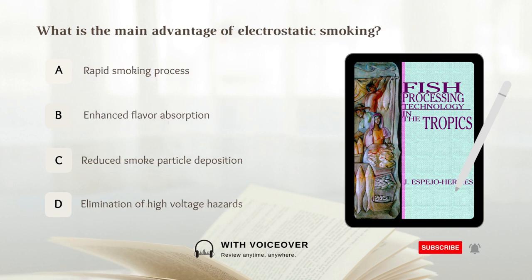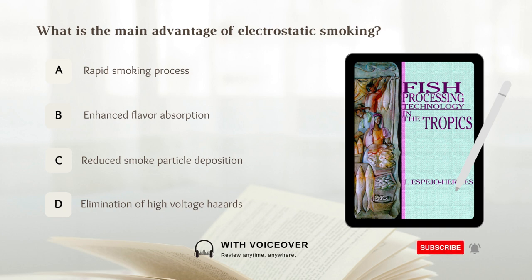What is the main advantage of electrostatic smoking? A. Rapid smoking process. B. Enhanced flavor absorption. C. Reduced smoke particle deposition. D. Elimination of high-voltage hazards. Answer: A. Rapid smoking process.